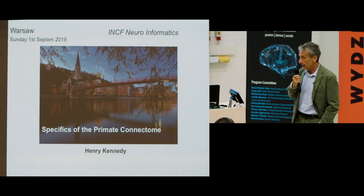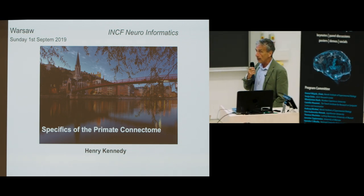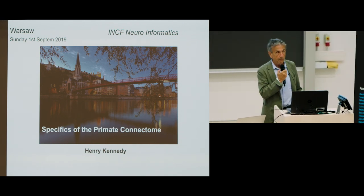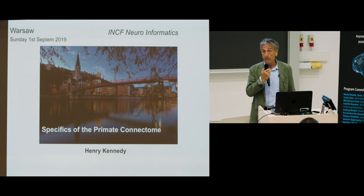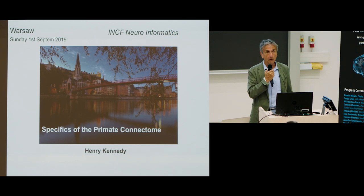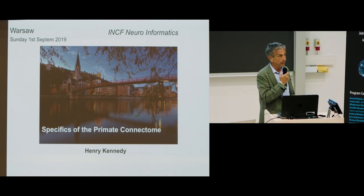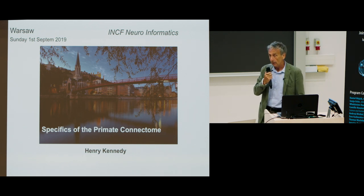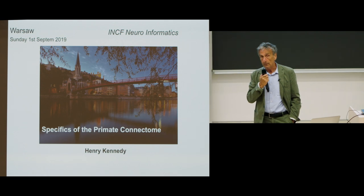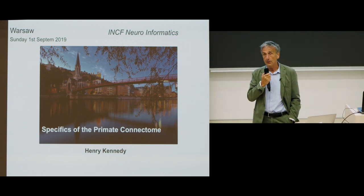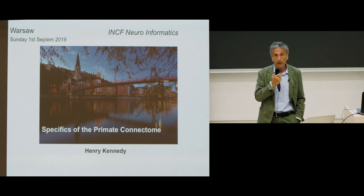The Allen Brain Institute's publication in 2014 made a number of mistakes. They were using computational methods to infer connectivity using very large injections which involved multiple areas, and their claim was that this was leading to a density of about 30%. We published our findings, though I don't want to go into the neuroanatomy details here.